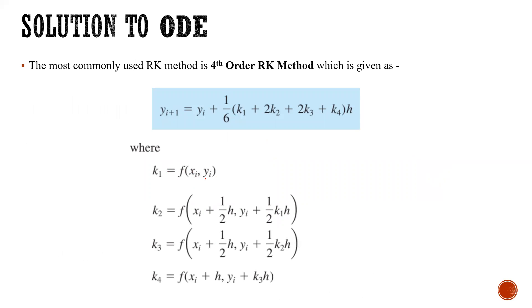Here k_1 is given as f(x_i, y_i), k_2 is given as f(x_i plus h/2, y_i plus k_1 h/2), k_3 is given as f(x_i plus h/2, y_i plus k_2 h/2), and k_4 is given as f(x_i plus h, y_i plus k_3 h).